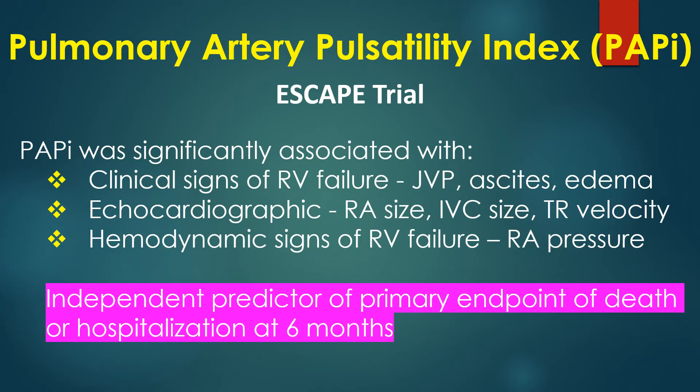PAPI was significantly associated with clinical features of right ventricular failure, including elevated jugular venous pressure, ascites, and edema; echocardiographic signs such as right atrial size, IVC size, and tricuspid regurgitation velocity; and hemodynamic signs of right ventricular failure like elevated tricuspid regurgitation pressure.